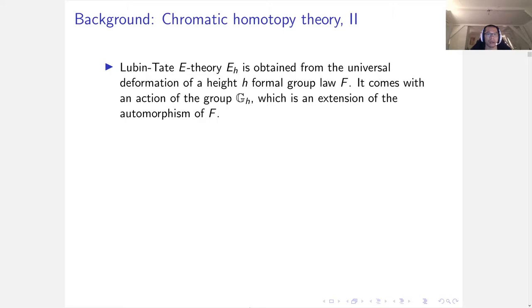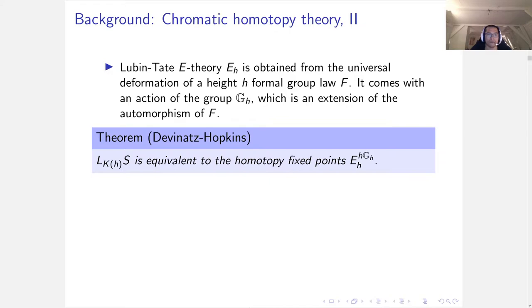This is where Lubin-Tate E-theory comes in. The E-theory E_h is obtained from the universal deformation of a height h formal group law F. It comes with an action of the Morava stabilizer group, which is an extension of the automorphism. A theorem of Devinatz-Hopkins shows that you can compute the K(h)-local sphere by computing the homotopy fixed point of E_h with this stabilizer group.